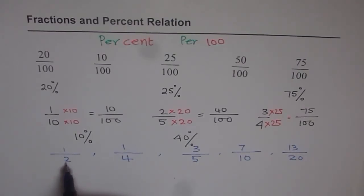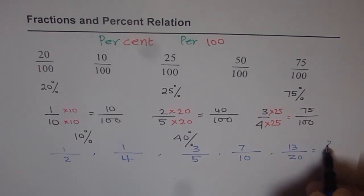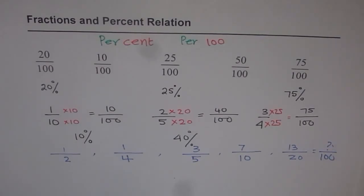So we have half, 1 fourth, 3 over 5, 7 over 10, and 13 over 20. Can you convert them to what? To something over 100. If you can do that, you know that is percent. So that is how we relate percent and fractions. I hope that helps you. Thank you and all the best.